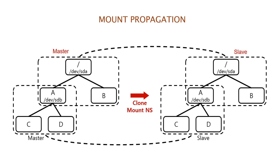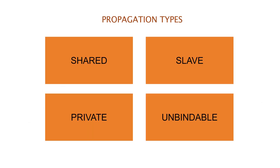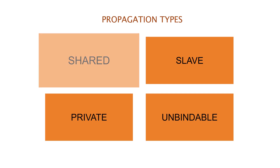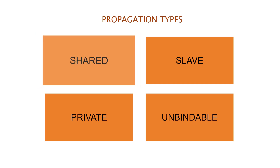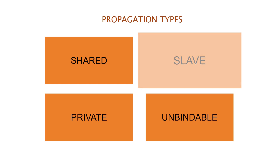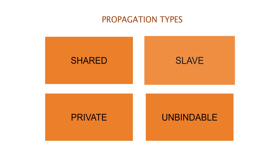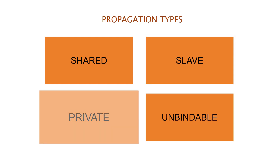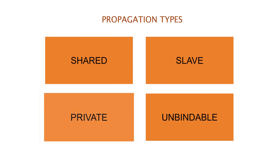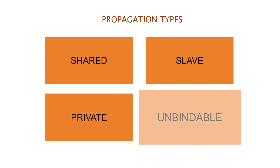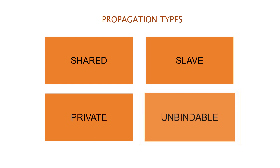These mount point changes are also called events. Mount propagation is of four types: shared, slave, private, and unbindable. In shared propagation, both master and slave namespaces propagate the events to each other. In slave propagation, the master namespace propagates the events to the slave, but the slave does not. In private propagation, both master and slave namespaces do not propagate the events to each other. In unbindable propagation, a mount point cannot be the source for a bind mount operation. When a new namespace is created, by default its propagation would be private. To get the propagation inherited to the clone namespace from the master namespace, the option propagation unchanged should be used with the unshare command.